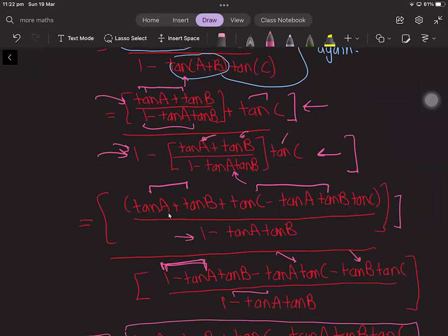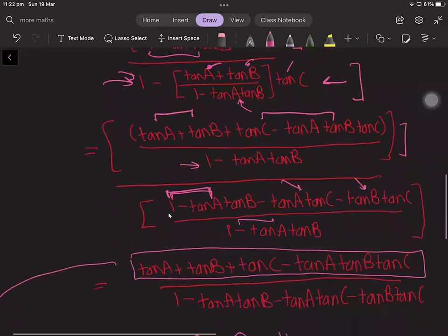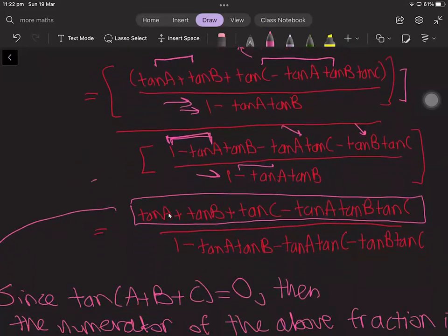And now we can cancel out the 1 - tan(A)tan(B) denominators in these fractions, so we end up getting a numerator of tan(A) + tan(B) + tan(C) - tan(A)tan(B)tan(C) and a denominator of 1 - tan(A)tan(B) - tan(A)tan(C) - tan(B)tan(C).